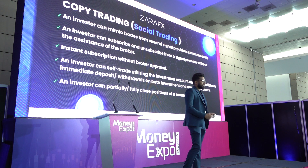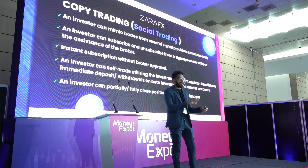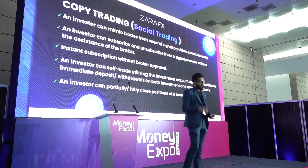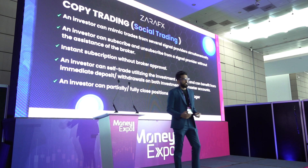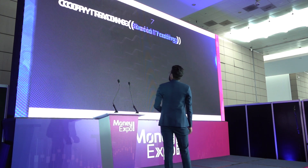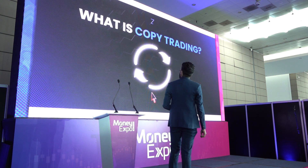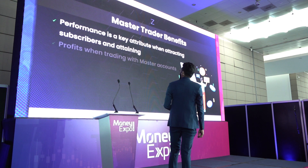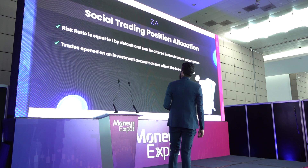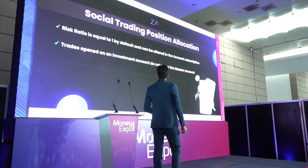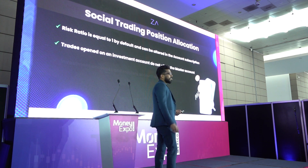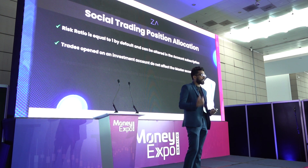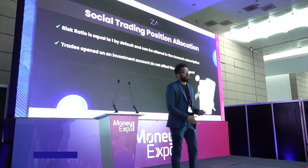For risk management, you don't need to follow just one master. You can diversify your investment across different masters, so if one master is making a loss, you can offset it with gains from another. This is social trading. The position allocation risk ratio is equal to one by default and can be altered. Trades opened on the investment account do not affect the master. So if you are following a master account and also want to open your own trade position, you can do that independently.